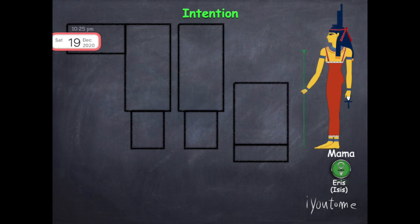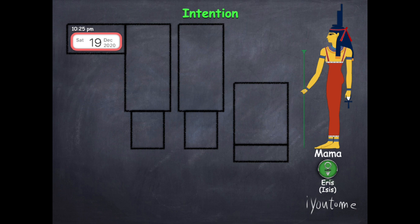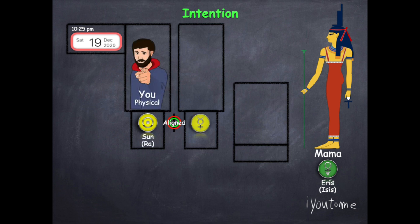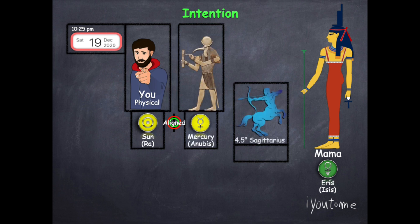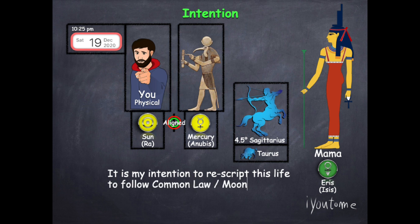The first alignment happens on December 19th, 10:25 PM Eastern Standard Time. This alignment is between the Sun or the physical you which aligns with Mercury the Akashic record keeper of all past, present and future lives in Sagittarius the river of heaven in the sub harmonic of Taurus the earth and mother. We will explain the sub harmonic briefly in the next slide. Here's the intention: It is my intention to rescript this life to follow common law moon law as a pure earth and mother.